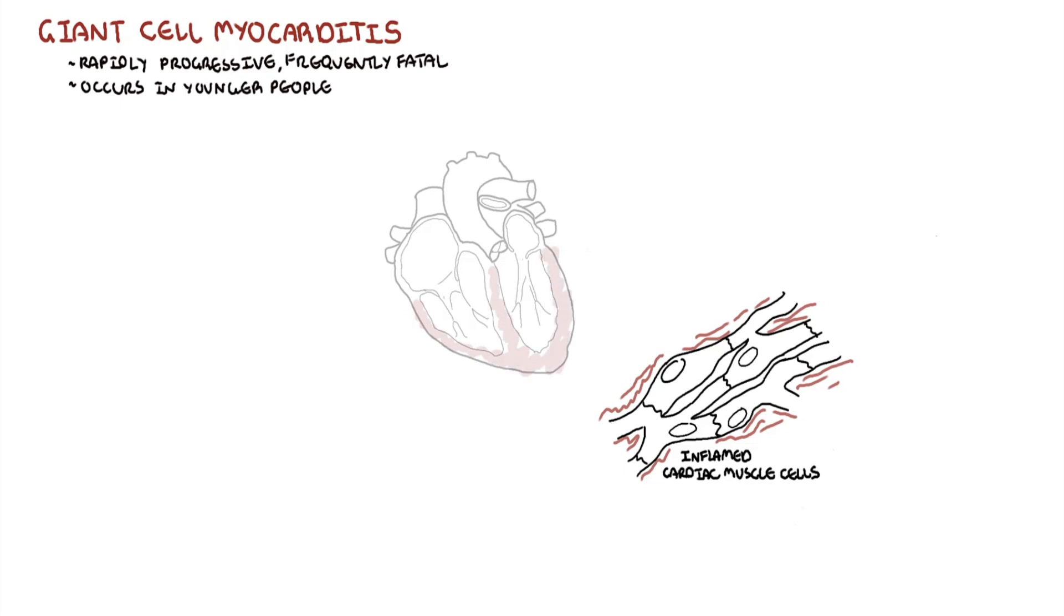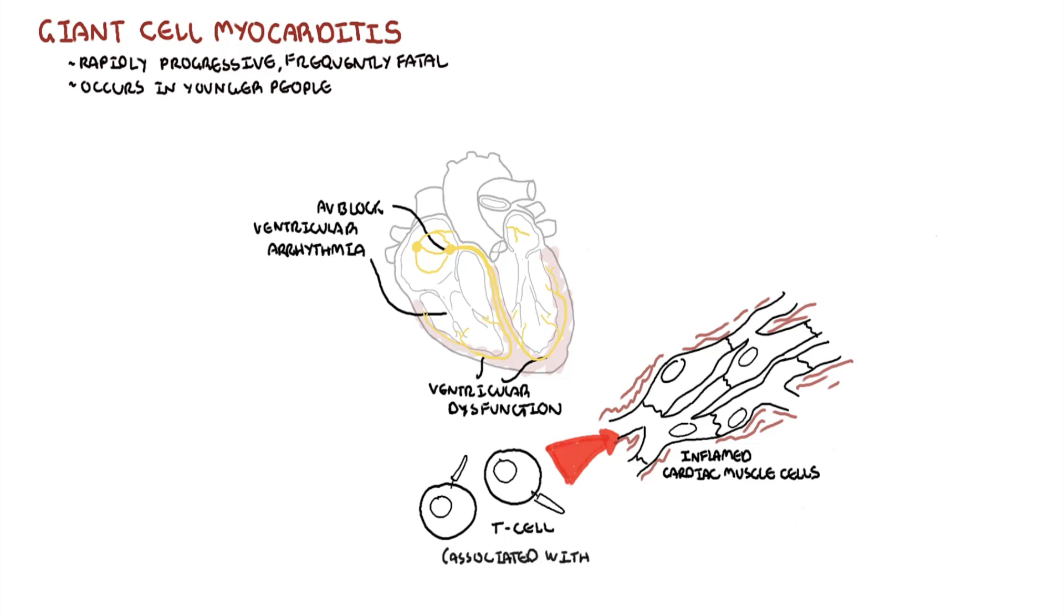Giant Cell Myocarditis is often rapidly progressive and can cause both left and right ventricular dysfunction. It is also associated with an increased incidence of high-grade atrioventricular block and ventricular arrhythmias. This disorder has been attributed to T cell-mediated inflammation and is associated with systemic autoimmune disorders in 20% of cases.